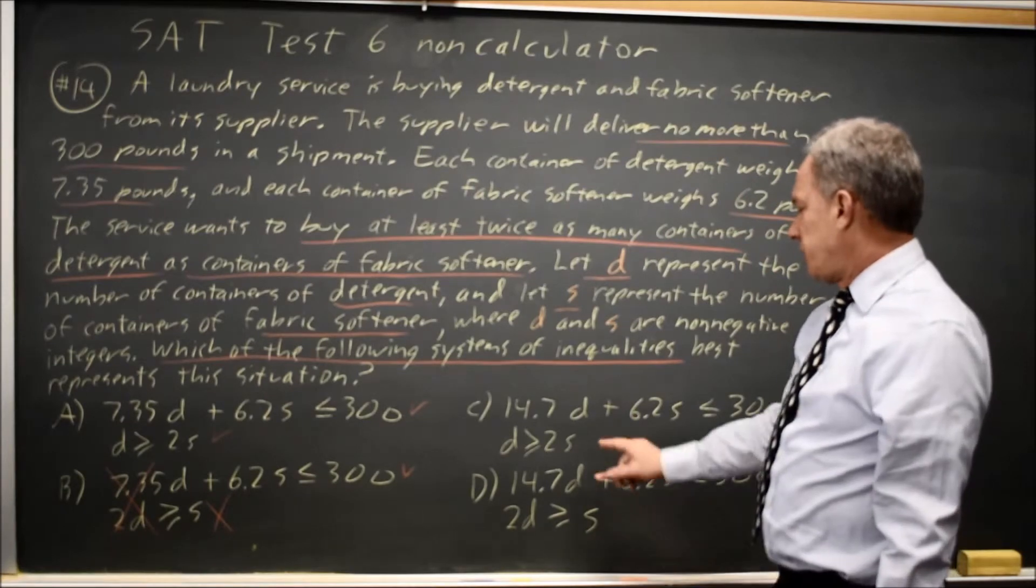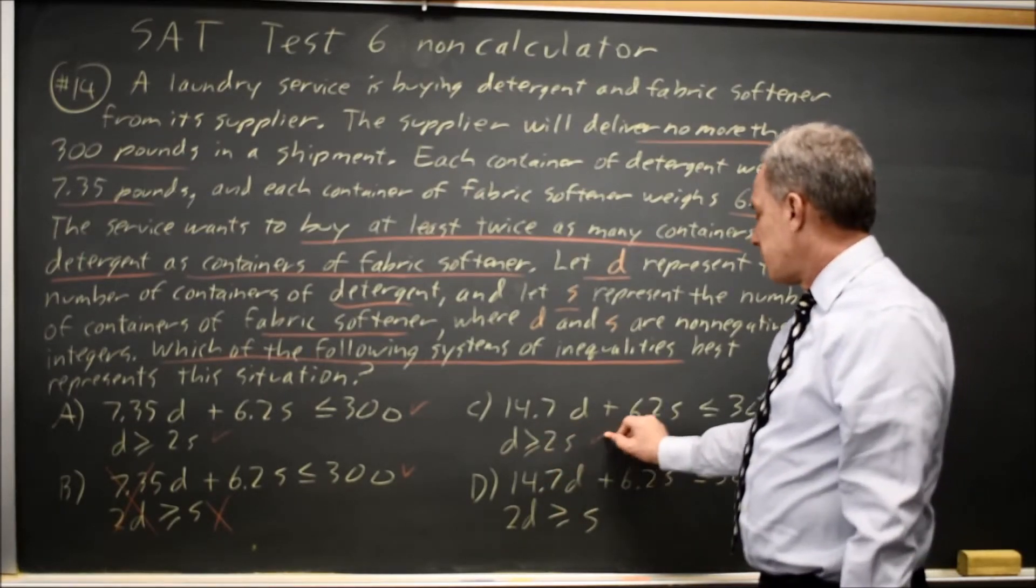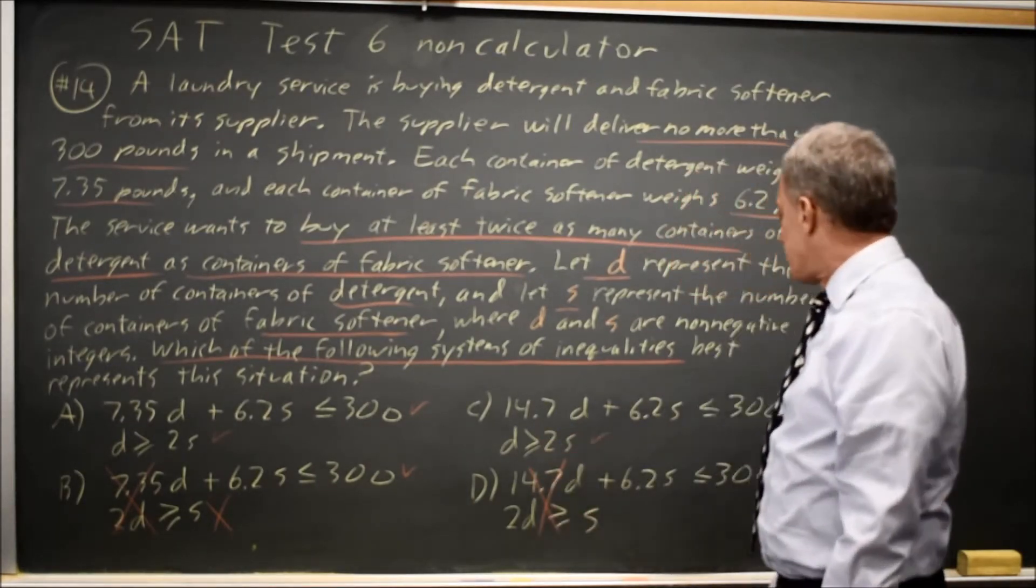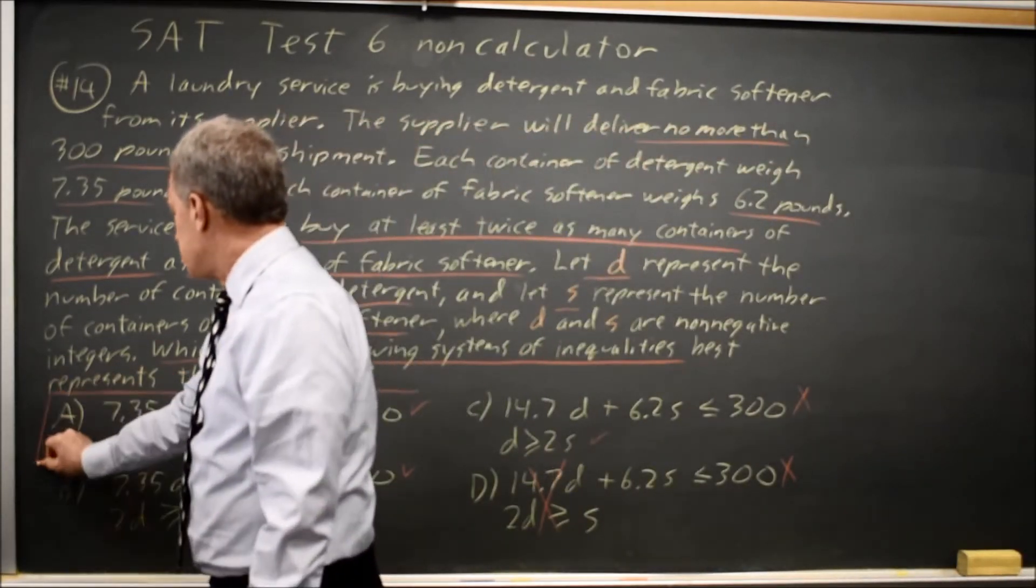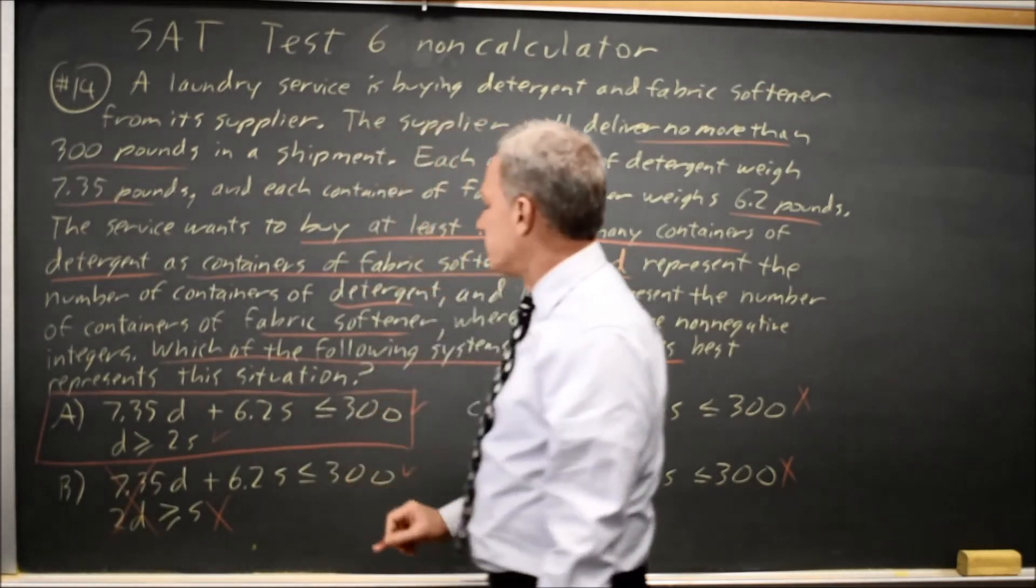Or if I were over here, when S is one D would be at least two, that would be C and not D. But I already ruled out choice C because of the first equation. So the only answer choice that matches those parts of the question is choice A.